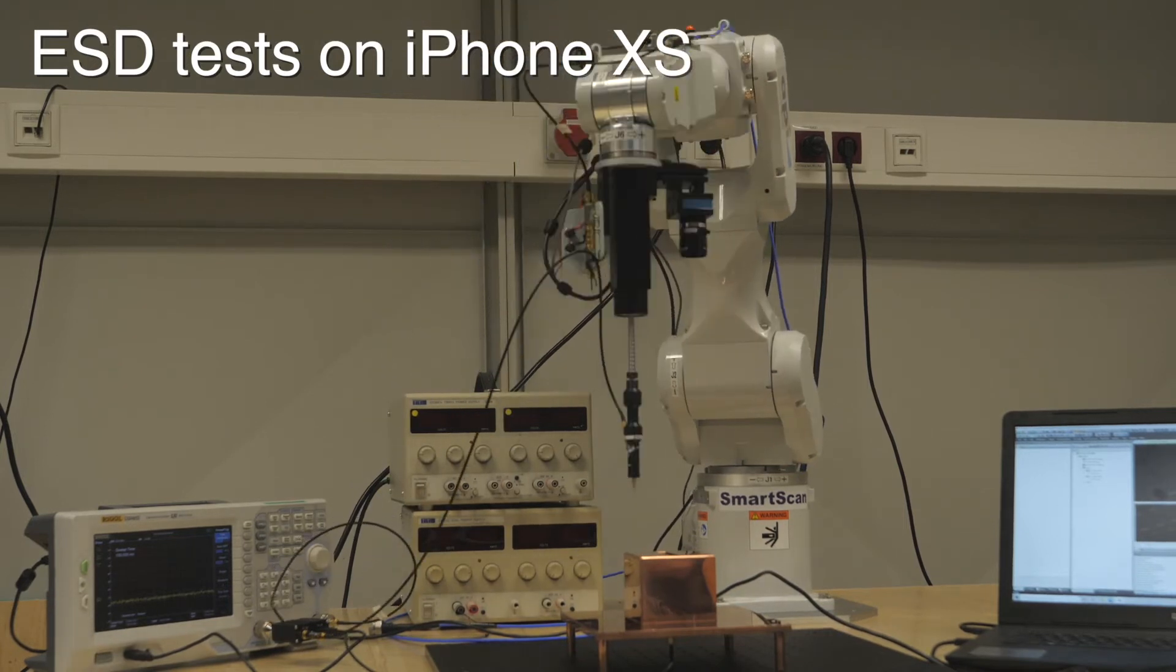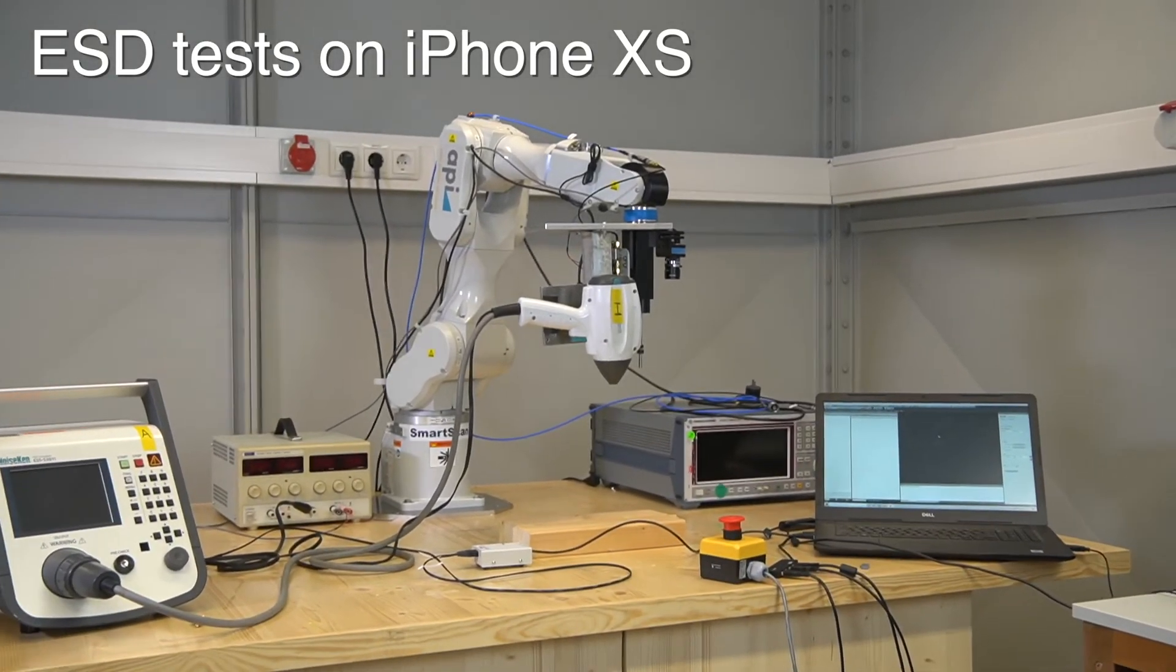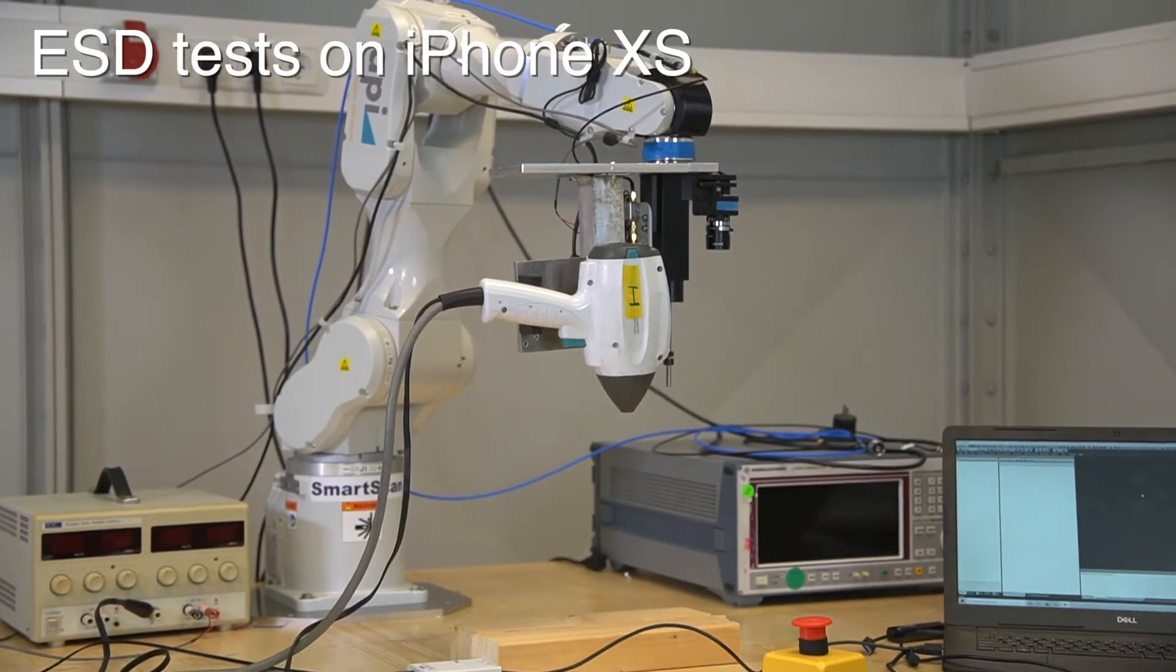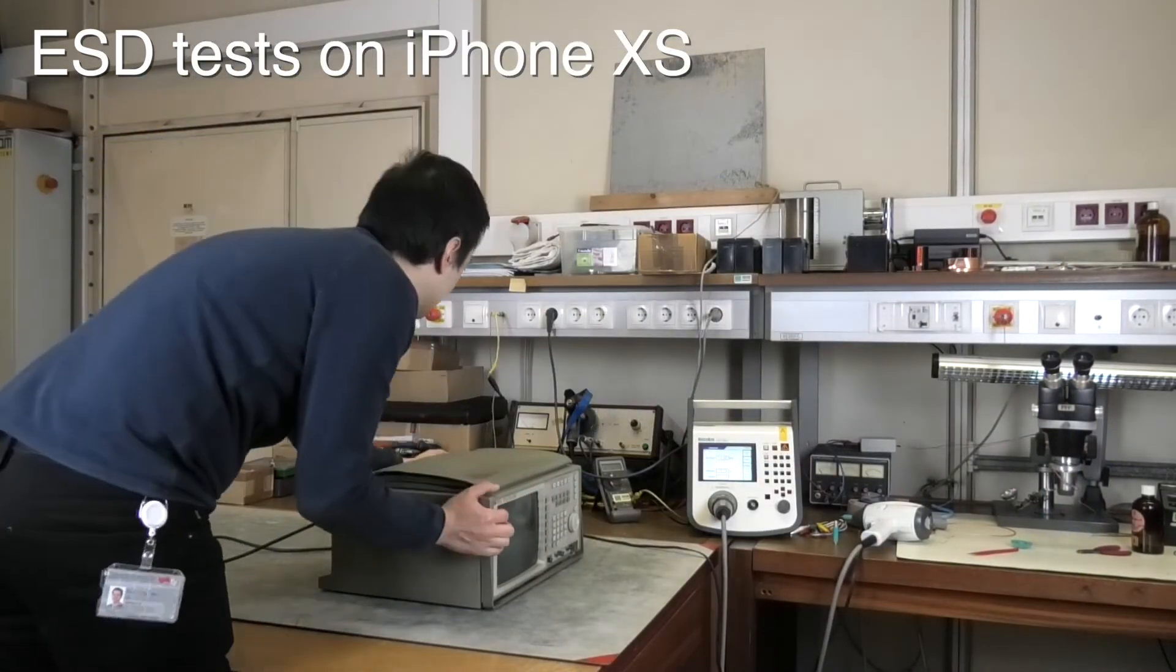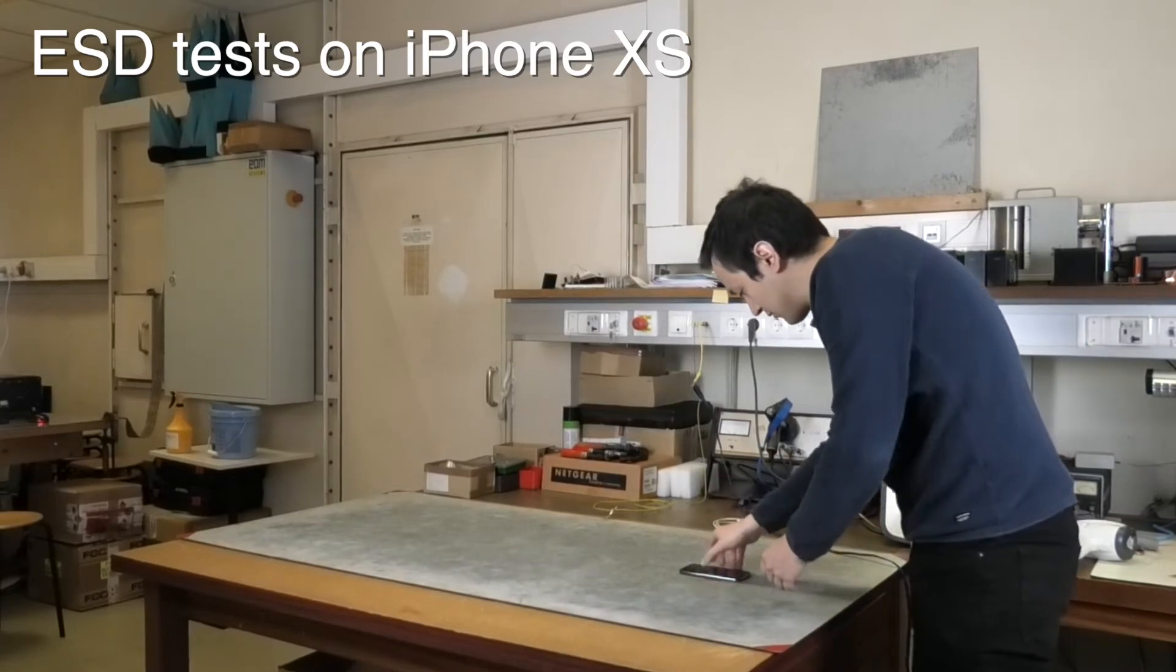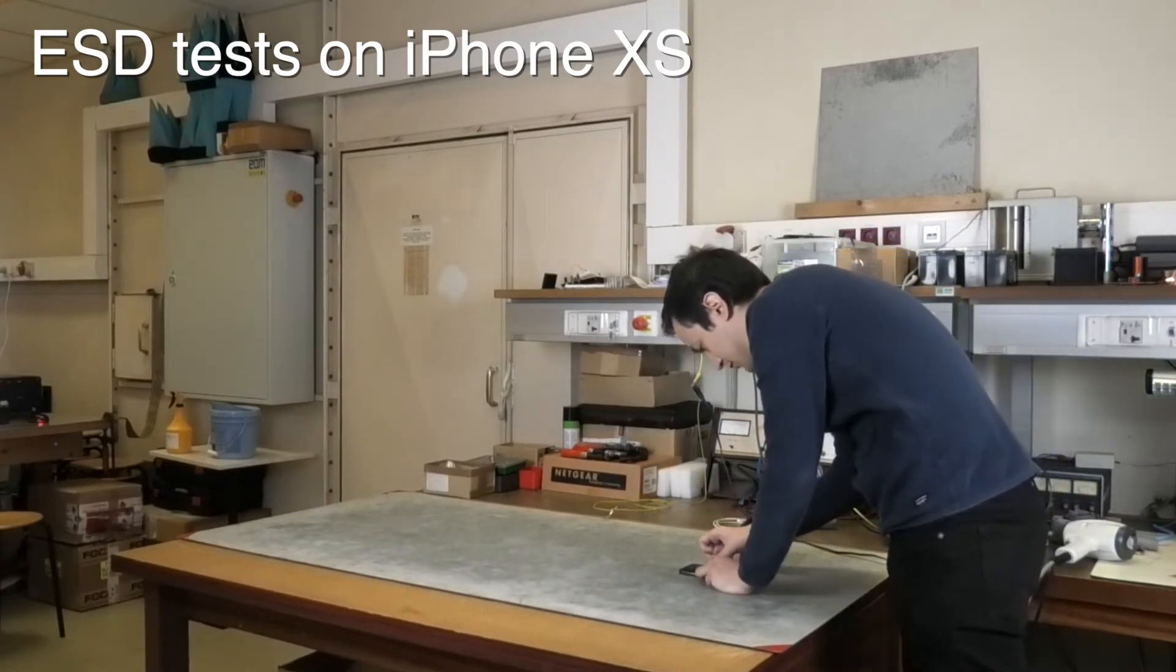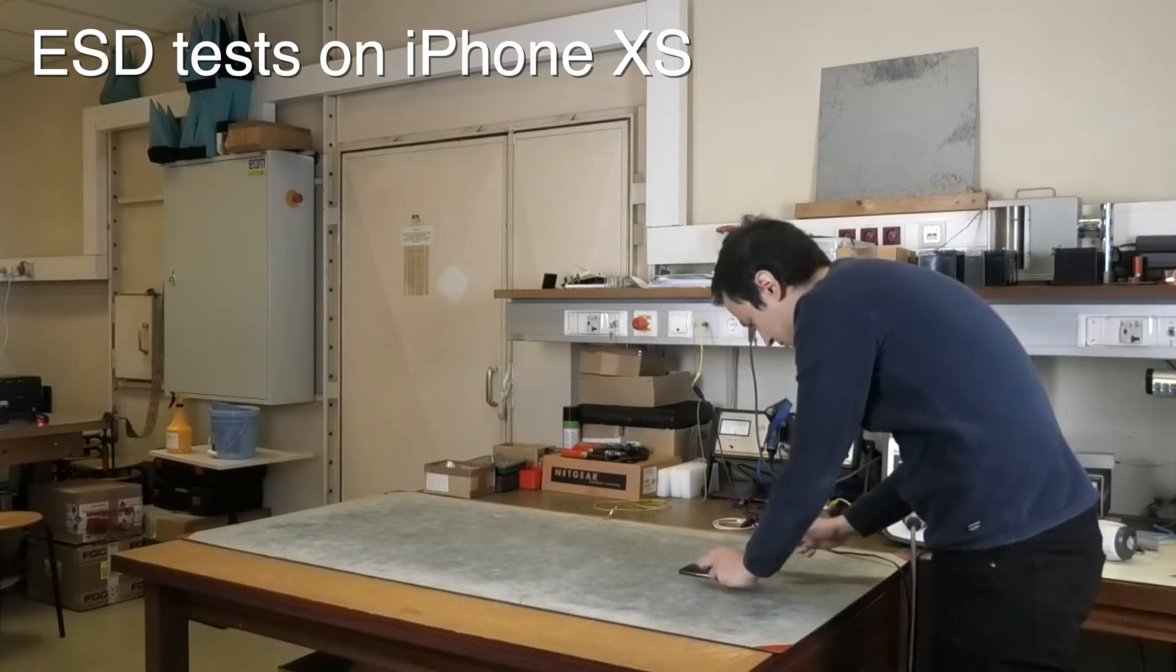And I can well imagine that Apple is using a test robot for this because you have to go through a wide variety of test scenarios. Once the phone is plugged into a charger. Once it's not. Once I use the camera app then I might make a phone call. So Apple must test through a lot of scenarios. I will just open the camera app and see if it continues to work after an ESD discharge.